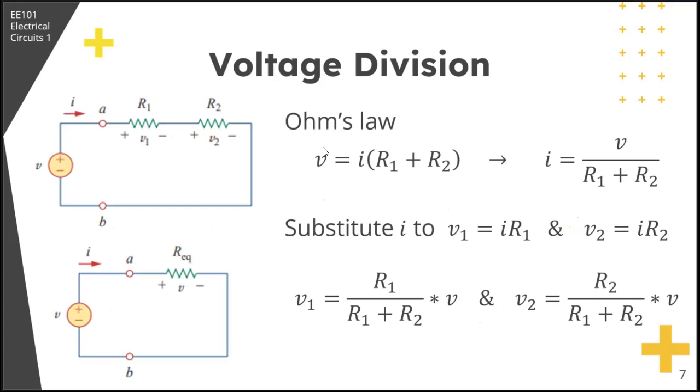Now, going back to our circuit, V is equal to I times the R equivalent, which is R1 plus R2. Then from that, we can get I is equal to V over R1 plus R2.